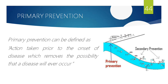Primary prevention is, by definition, actions taken prior to the onset of disease that remove the possibility of disease ever occurring. For example, if a person has been smoking for months or years, we give tobacco cessation counseling. He has not yet developed any lung cancer, so we educate him and modify his habit. Primordial is educating people not to smoke; primary is modifying the existing smoking habit through education.